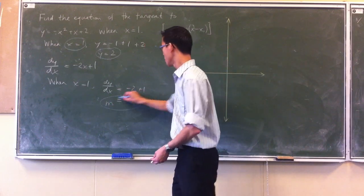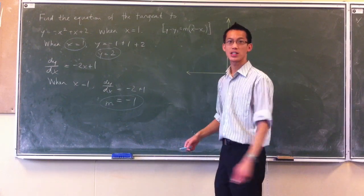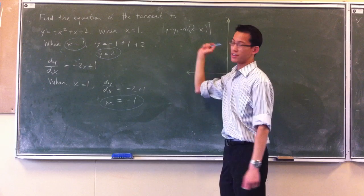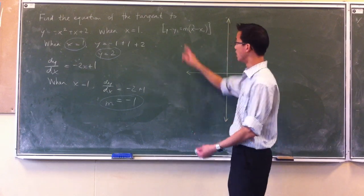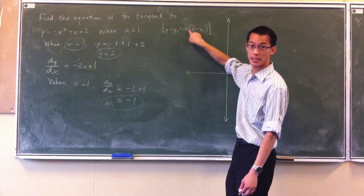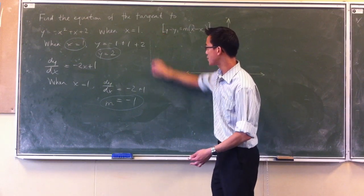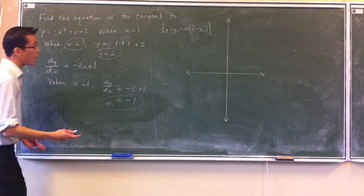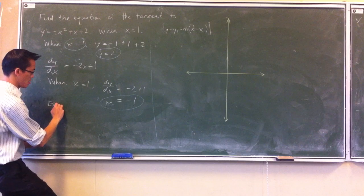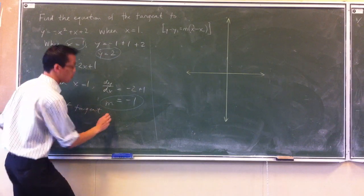So I've used differentiation to find that part. I've now reduced it back down to a problem that you learned how to do in year 8: how to work out the equation of a line going through a particular point with a particular gradient. So all I need to do is take that information and sum it in. So the equation of a tangent will be...